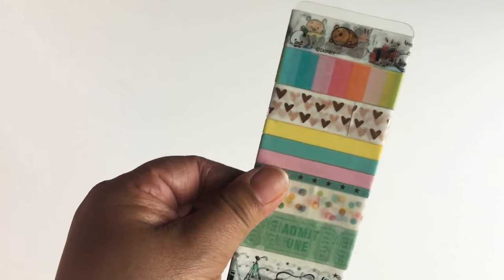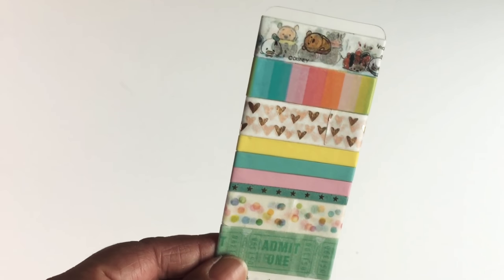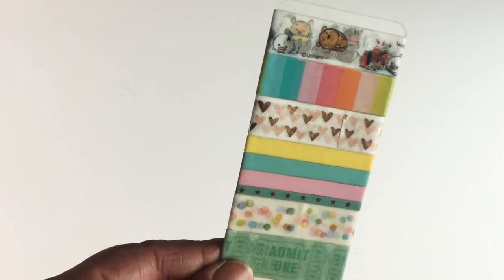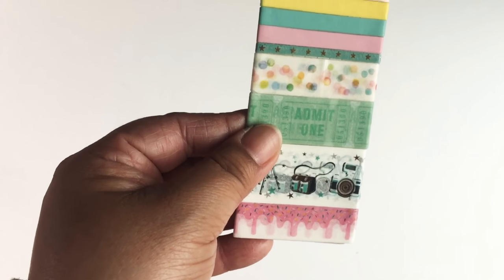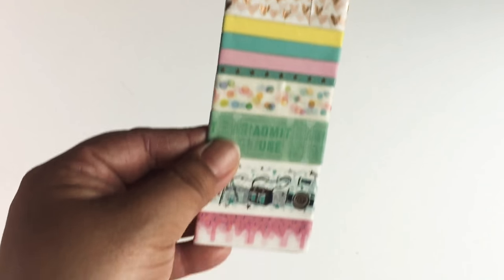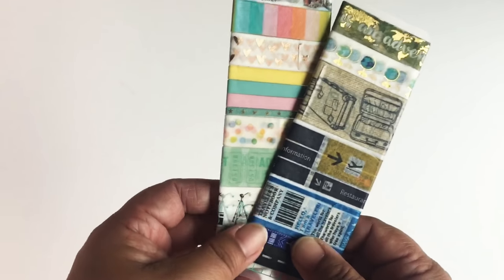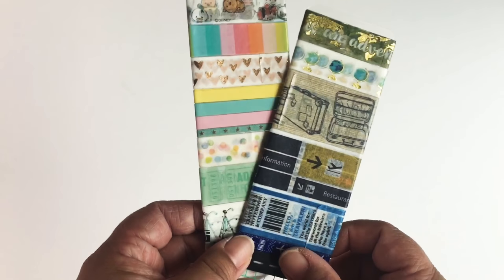Depending on where we're going, like let's say Disneyland, I'll also do another card with washi that I think will go great with the location. If we were going to Disneyland, this would be what I would bring. This one here I was going for a more vintage Disney look. This allows me to have a variety of washi without having to bring a whole bunch of rolls.